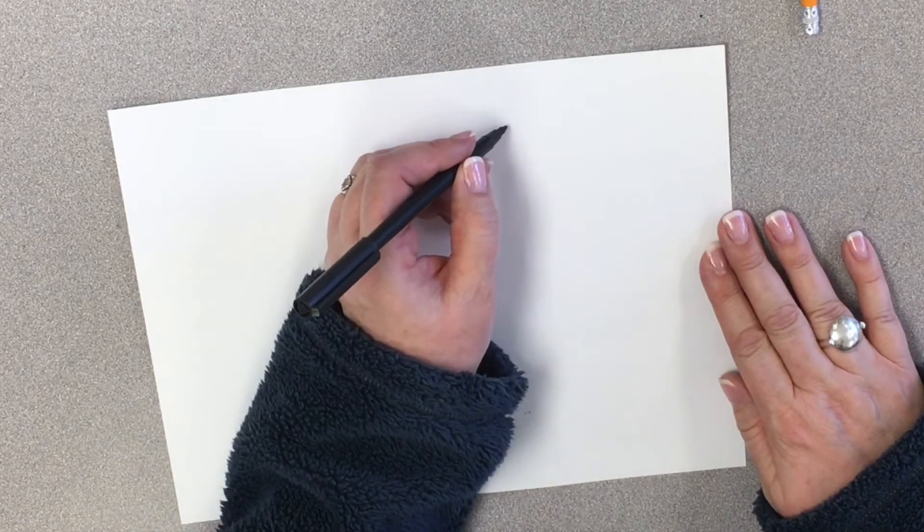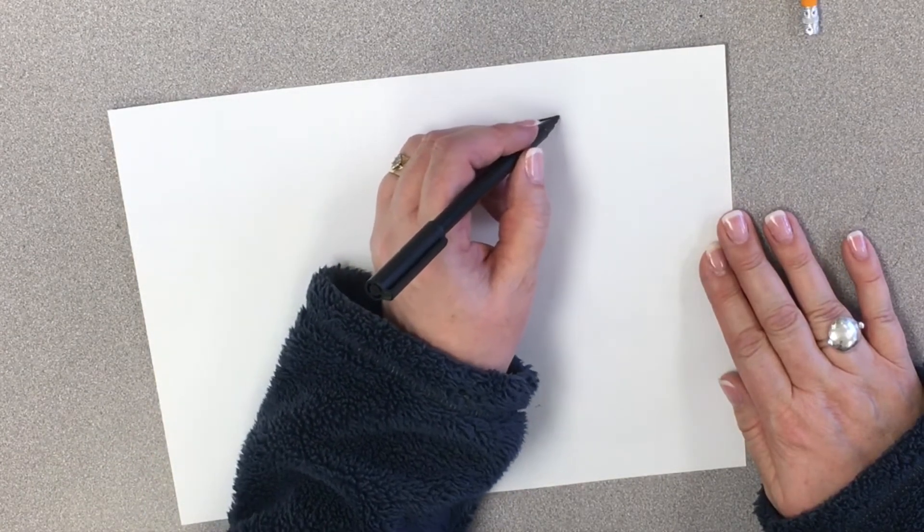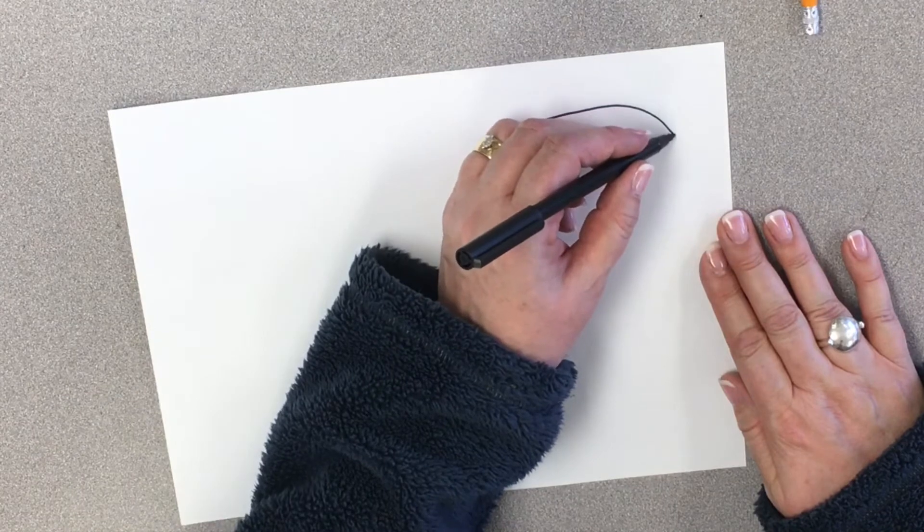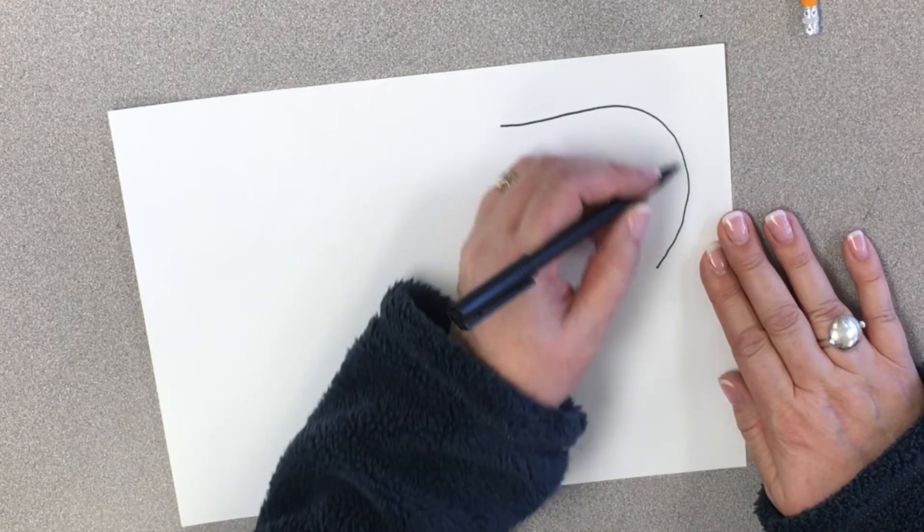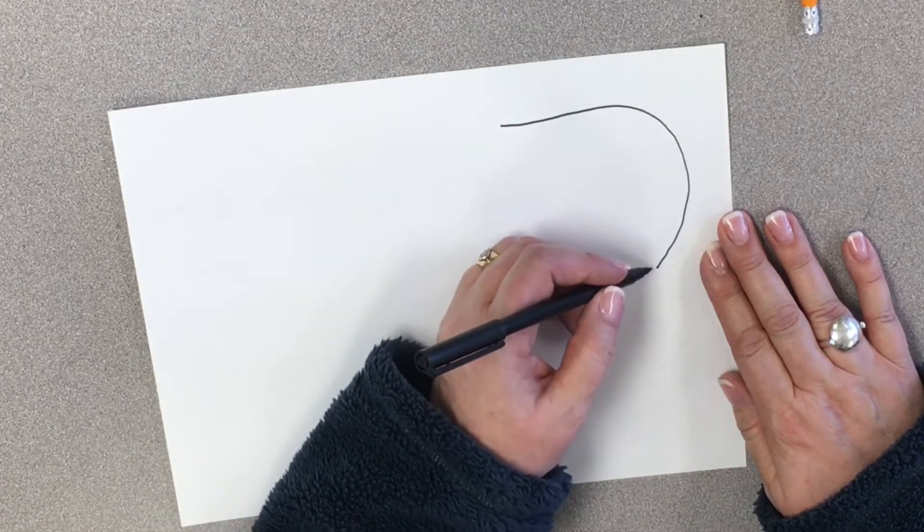All right. So, we're going to start in this upper corner up here and we're going to draw a big swirly line. Swirly. Is that a word? I don't know if that's a word. But it's just going to be a nice curve like so.